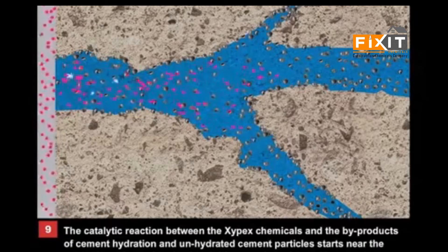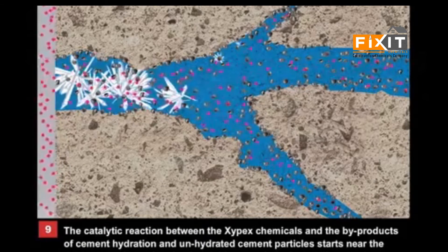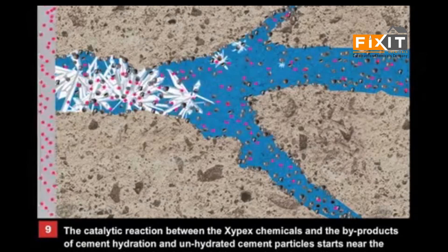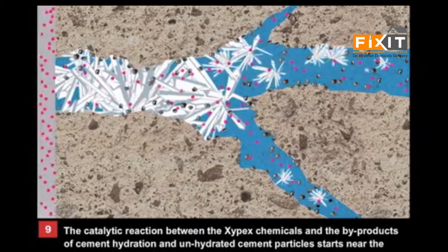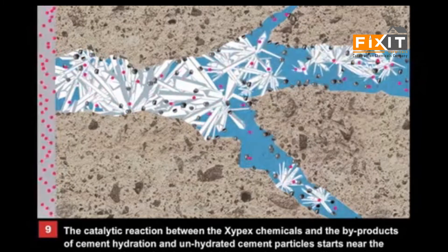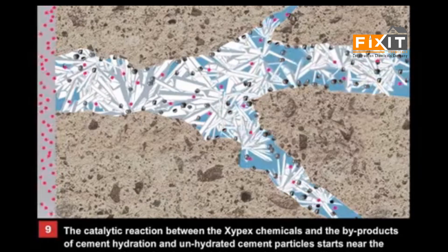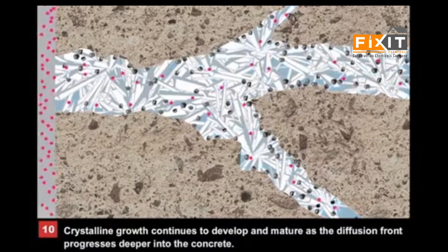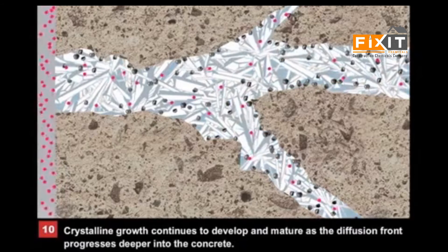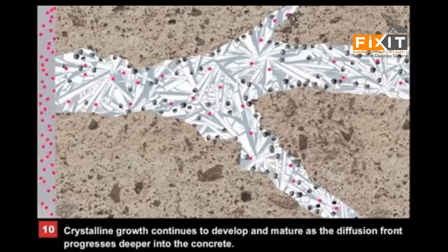The catalytic reaction between the Xypex chemicals and the byproducts of cement hydration and unhydrated cement particles starts near the concrete surface, forming insoluble crystals in the capillary tract. Crystalline growth continues to develop and mature as the diffusion front progresses deeper into the concrete.